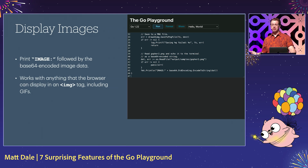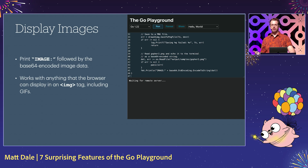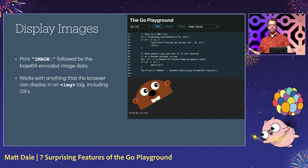Finally, you can display an image in the output terminal. In this example, we're using the Draw2D library to generate and display an image of a gopher head.